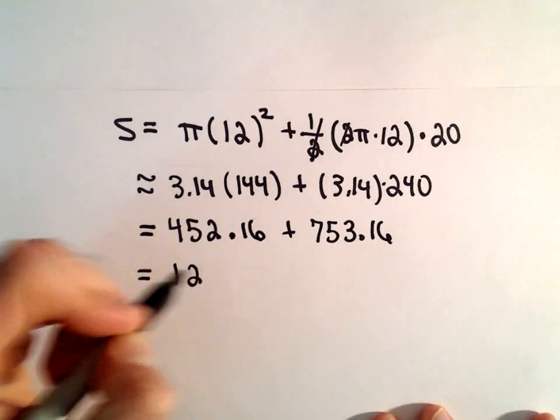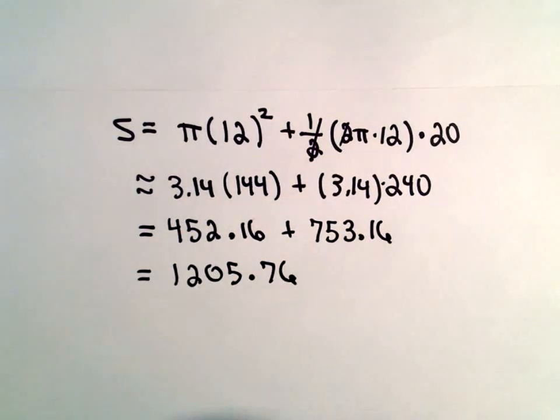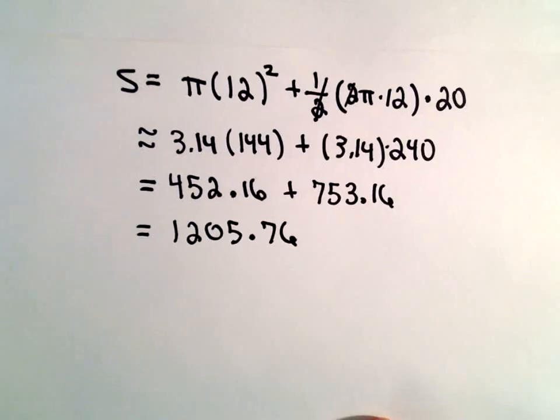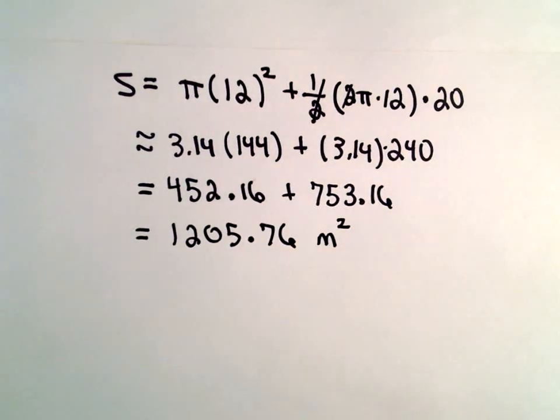And if we add those together, I'm getting 1,205.76. Our original units were in meters, so our final units will be in meters squared or square meters.